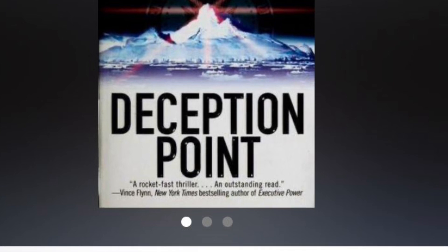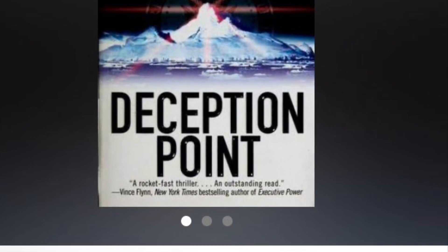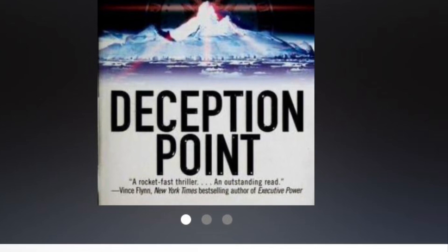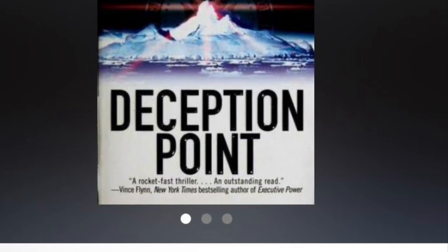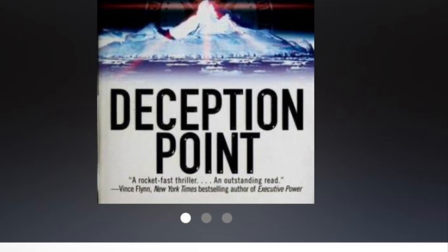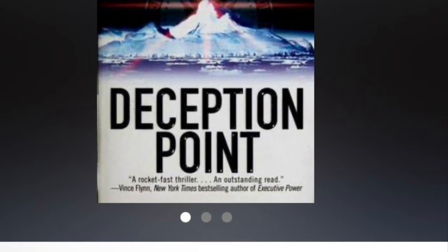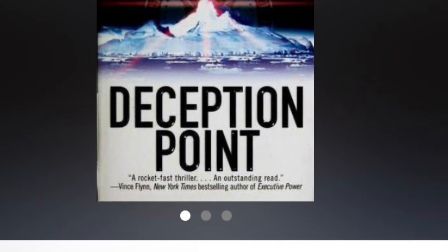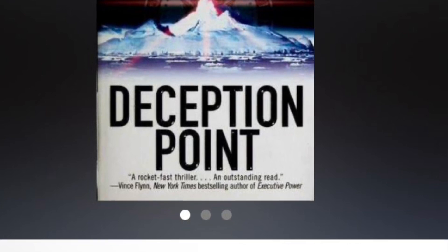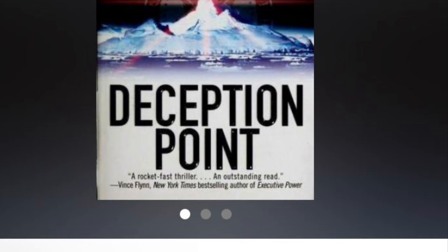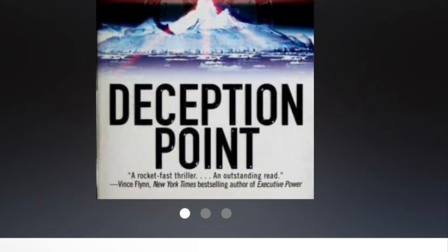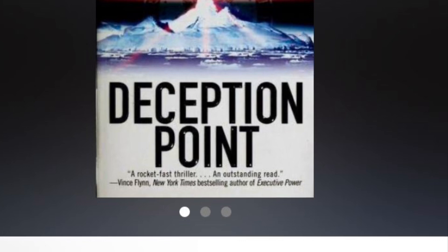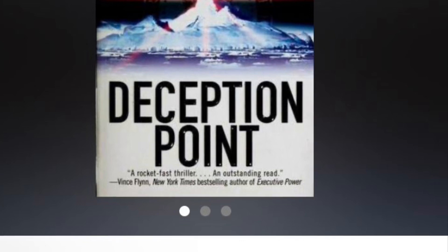Plot: The novel opens with the discovery of a meteorite in the Arctic ice cap. The meteorite contains fossils of giant insects, which would be proof of extraterrestrial life. The White House, eager to announce the discovery just days before a presidential election, sends Rachel Sexton to verify its authenticity. Rachel is accompanied by Michael Tolland, a Harvard symbologist who is an expert on ancient symbols and codes.